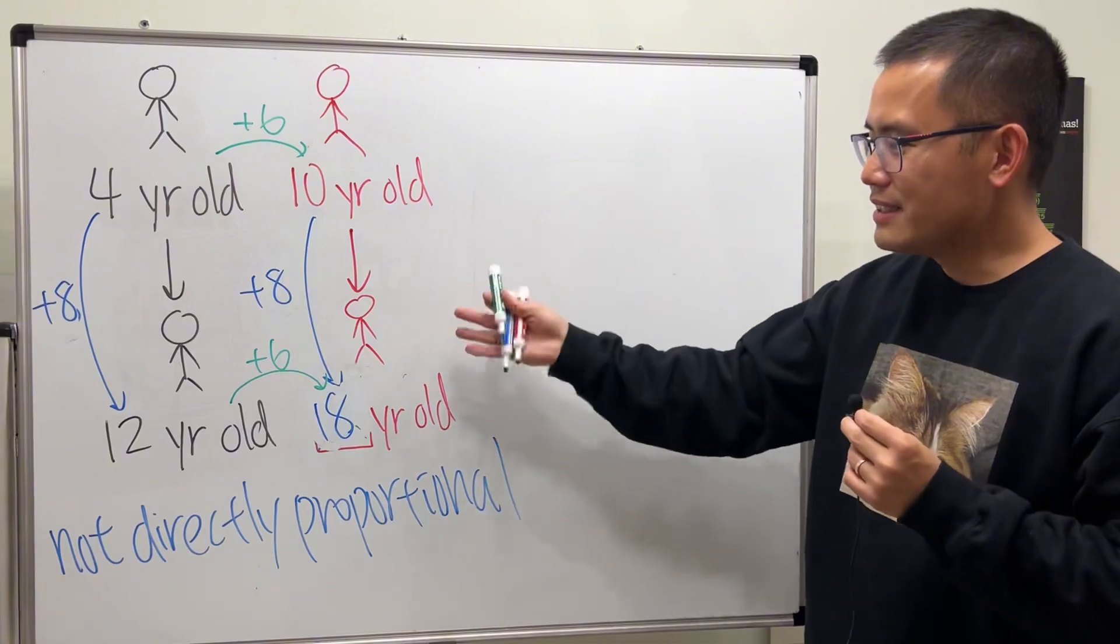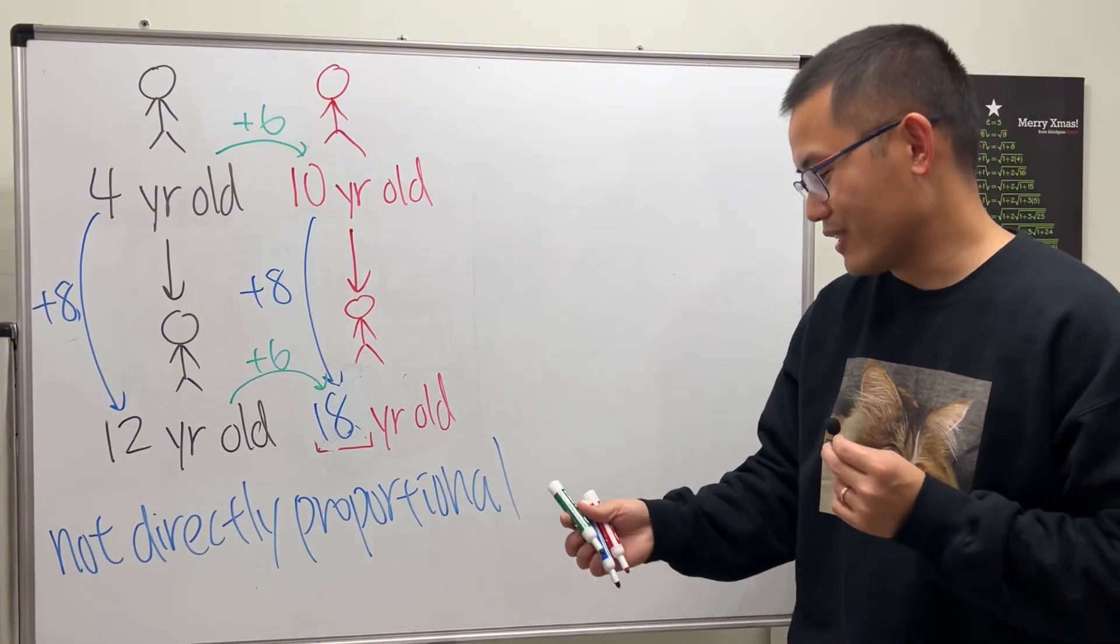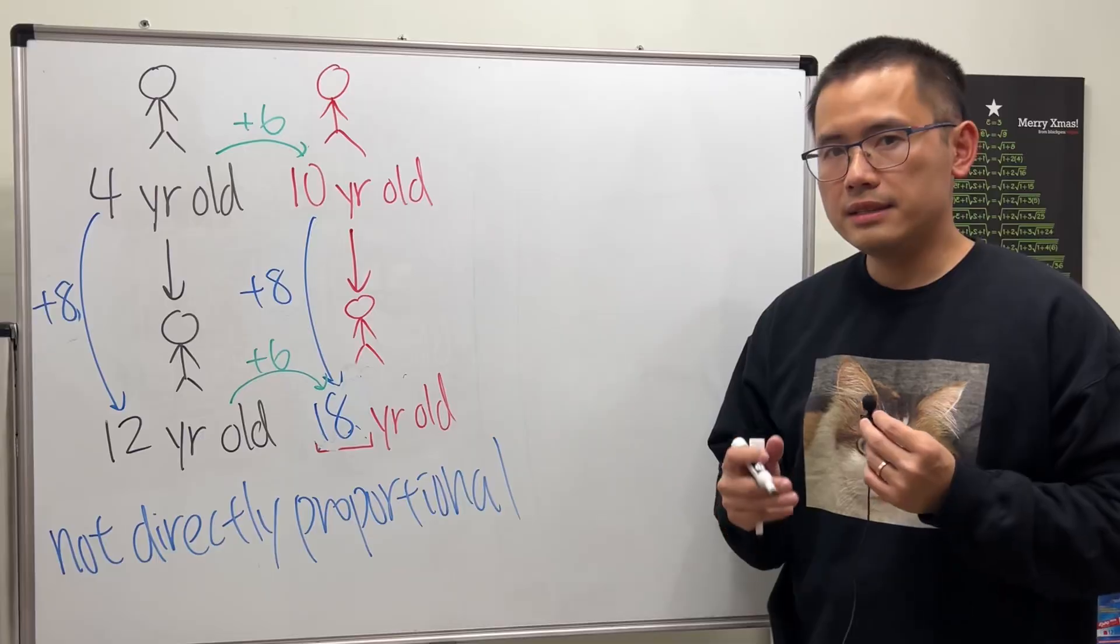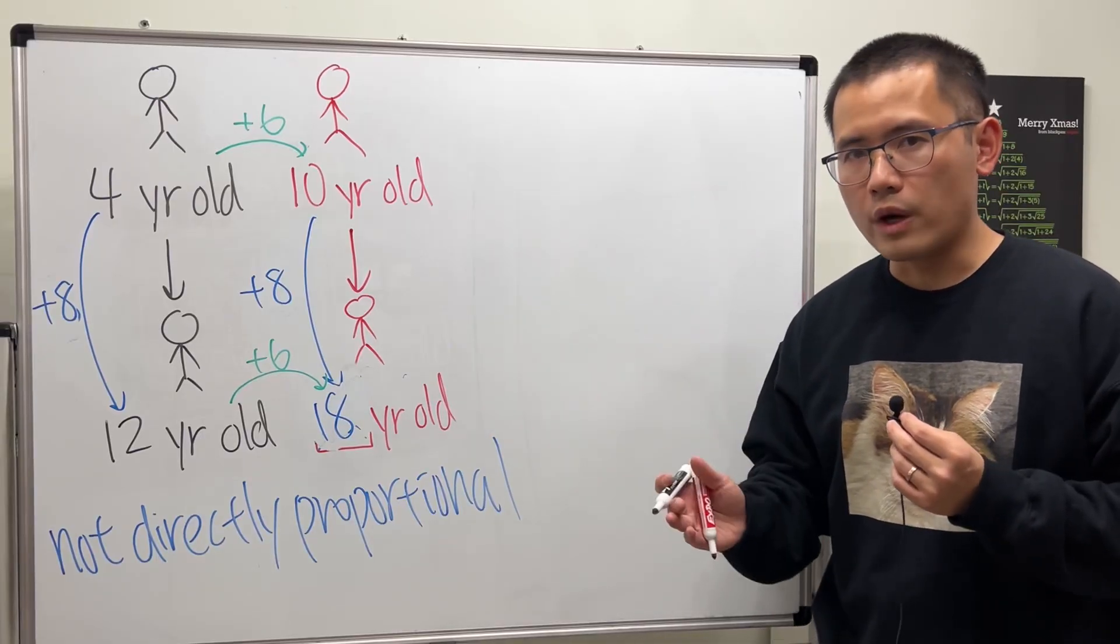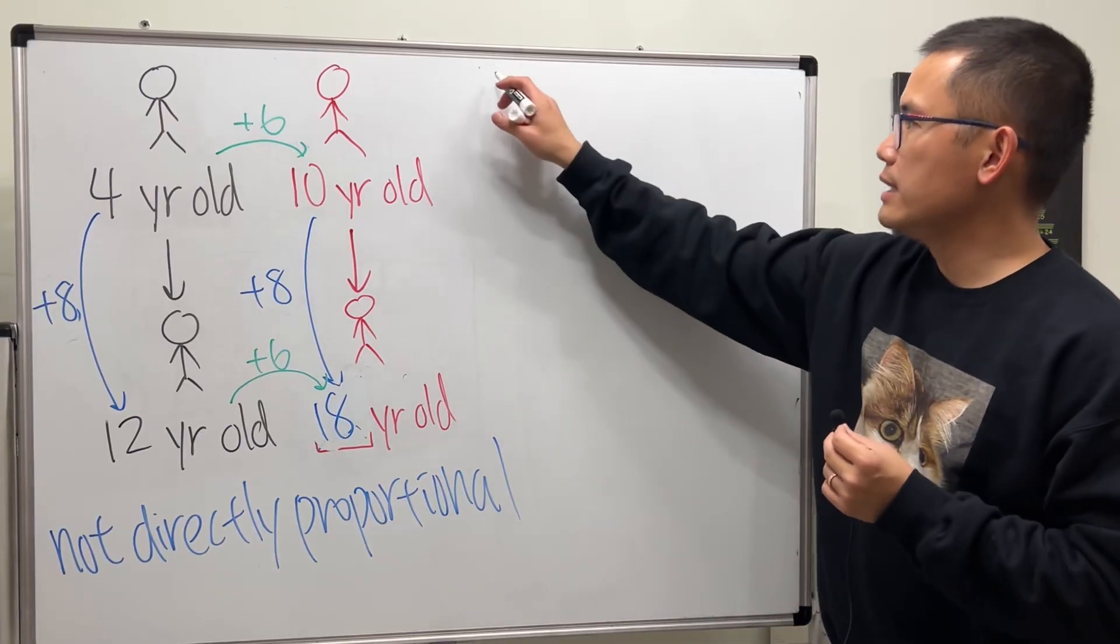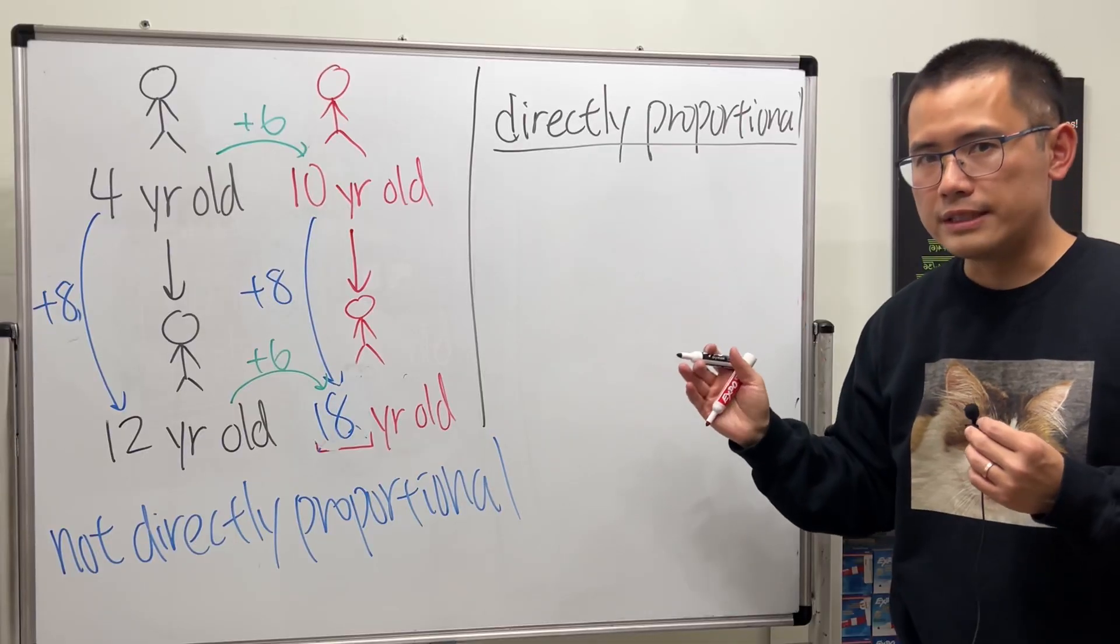So again, in this situation the ages are not directly proportional. So now I would like to give you guys an actual example where the quantities are actually directly proportional.